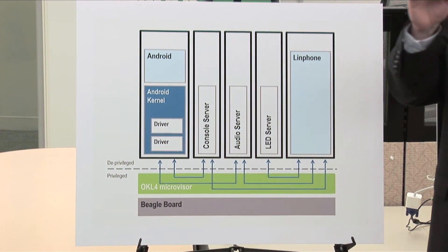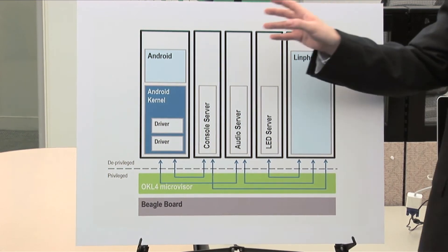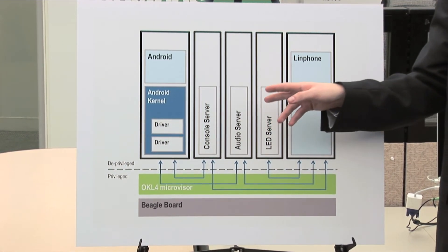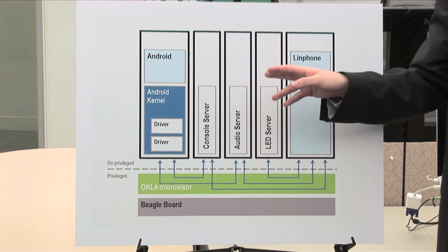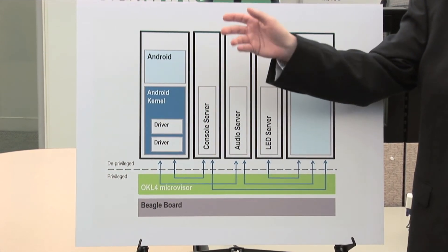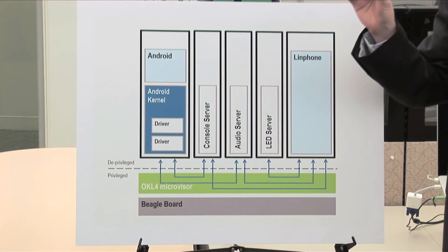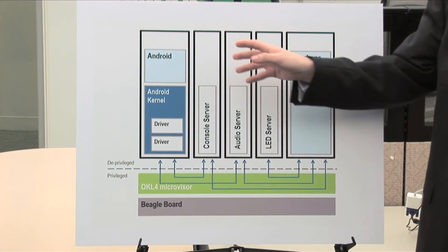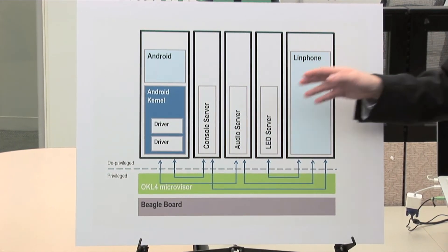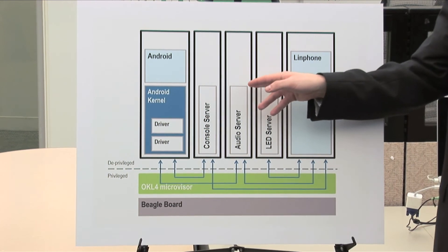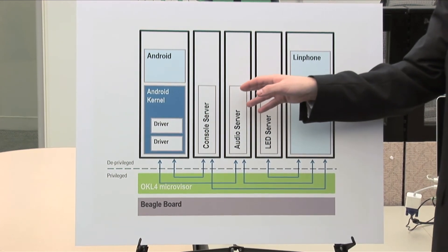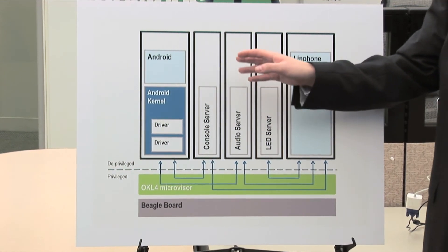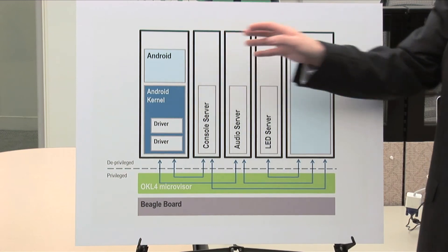OKL4 is actually able to go one step further, however, and not just isolate the applications themselves, but the drivers that they rely on. So in this case, the audio device driver, for example, is still required to be used by Android to play things like media. However, when the system is in secure mode, we want to guarantee that Android is not able to gain access whatsoever to that audio device. So we fulfill this by having an audio device driver with a security policy implemented here, which means that when the system is in secure mode, the audio device server prevents access from the Android component.